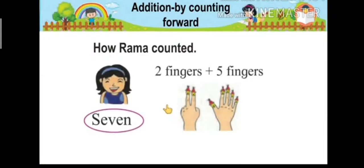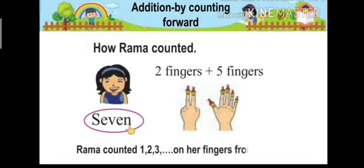How Rama counted? She took two fingers for two seedlings and five fingers for five seedlings that were already in the garden. Then we have to find total number of seedlings. Rama counted one, two, three and so on, her fingers from one to seven. Here Rama counted total fingers from one to seven and got answer seven.